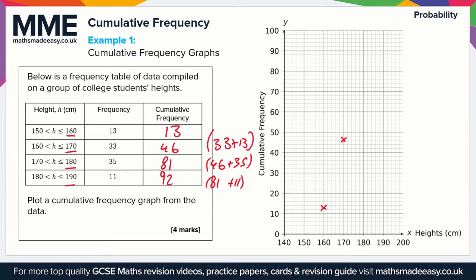And for the next one, go to 180 and then up to 81, about there. And then for the last one, 190 and then up to a height of 92. So there we go. With the cumulative frequency graph, the last thing to do is just to plot all of these points and put a line through all of these points, which should just be a smooth S-shaped curve. That's all there is to it.